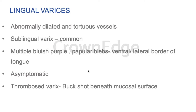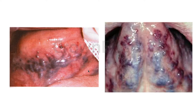Lingual varices are abnormally dilated and tortuous vessels seen in the sublingual region. They present as multiple bluish-purple papular blebs on the ventral or lateral border of the tongue. They remain mostly asymptomatic but may occasionally rupture and cause bleeding. When thrombosed, they are called buckshot lesions beneath the mucosal surface.